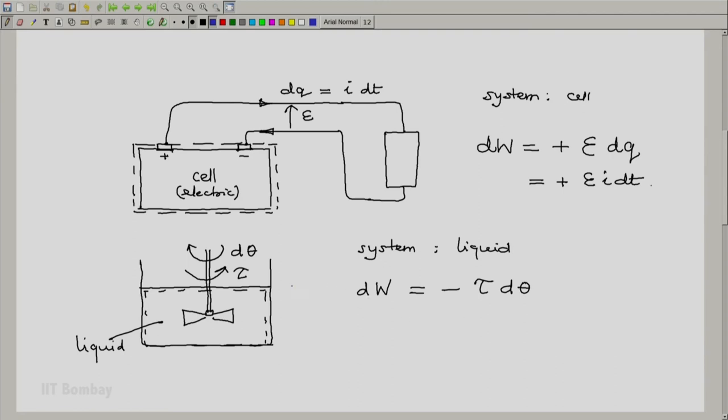And now you will notice that if I insert a stirrer and try to rotate it, I have to overcome a torque. And hence my work done by the system is negative, minus tau d theta.